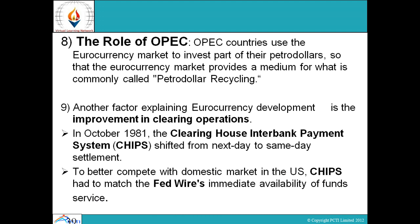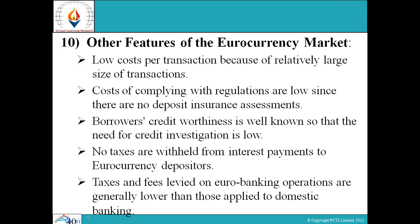Number nine: another factor explaining euro currency development is the improvement in clearing operations. In October 1981, the Clearing House Interbank Payment System (CHIPS) shifted from next-day to same-day settlement to better compete with the domestic market in the US. Number ten: other features of euro currency market — low cost per transaction due to relatively large transaction sizes, low cost of complying with regulations since there are no deposit insurance assessments, borrower creditworthiness is well known so credit investigation needs are low, no taxes are withheld from interest payments to euro currency depositors, and taxes and fees on euro banking operations are generally lower than those applied to domestic banking.